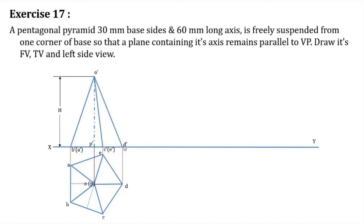We have to find the center of gravity. For a pentagonal pyramid or any pyramid, the center of gravity lies on the axis, at a distance of H/4 from the base. It is not H/3 — H/3 is for triangular planar shapes. For a solid pyramid or cone, the centroid is at H/4 from the base. Don't forget: H/4, not H/3.